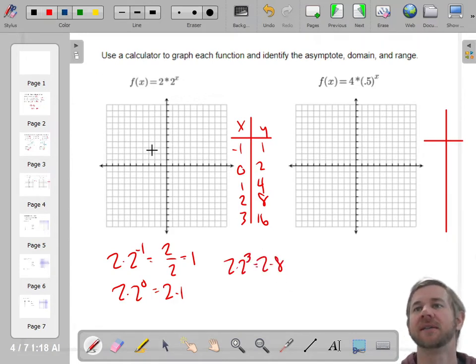So when I draw this, negative 1's at 1, 0's at 2, 1's at 4, 3's at 8, or 2's at 8, rather. And then it's going to be asymptotic. So it's going to look like this.